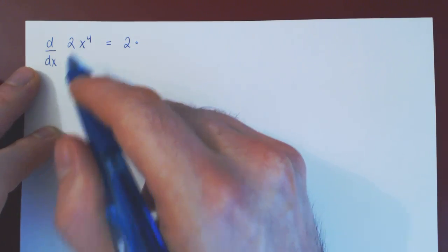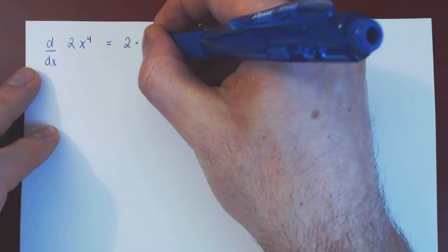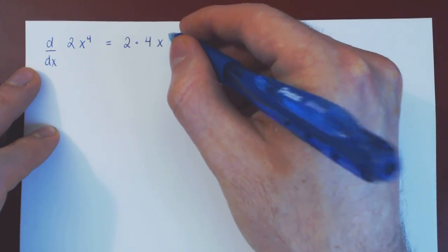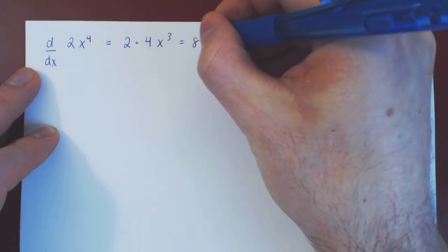The derivative of x to the 4 with respect to x, the power rule says bring the exponent down and subtract 1 from the exponent. 4 minus 1 is 3, and in the end you're left with 8x cubed.